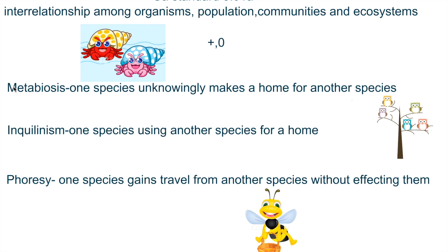All right. To summarize the nomenclature and our definitions of what we learned today. The first one was metabiosis. One species unknowingly makes a home for another species like the hermit crab and the shell.